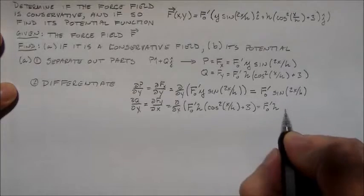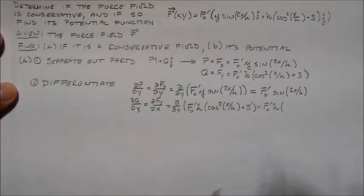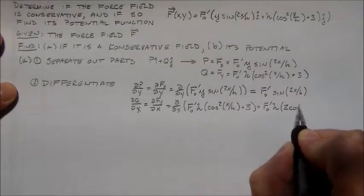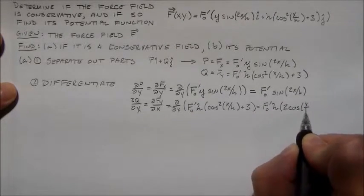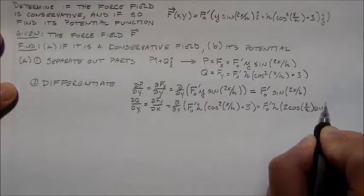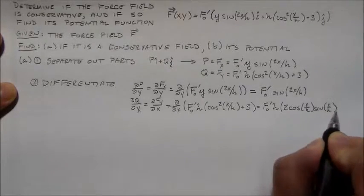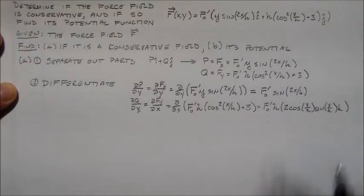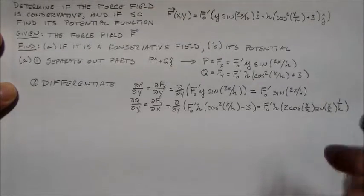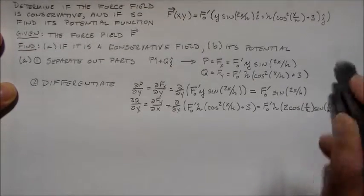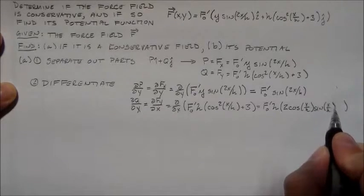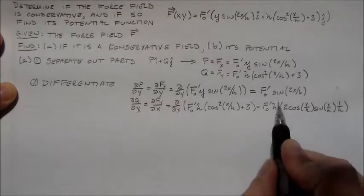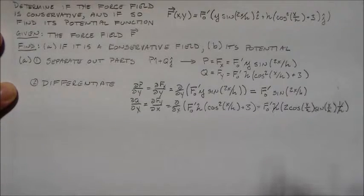F naught prime h, those are both constants. We don't have to worry about them. 3 is a constant with respect to x. So its derivative is 0. So we just have to worry about the derivative here, which is 2 cosine x/h sine x over h all times derivative of x over h, which is 1 over h. dx over h, dx is 1 over h. Okay, that's good. That's good, because these two guys are going to cancel.